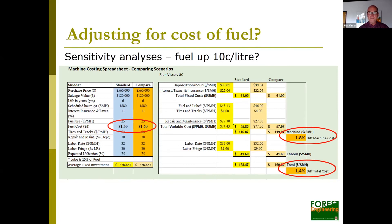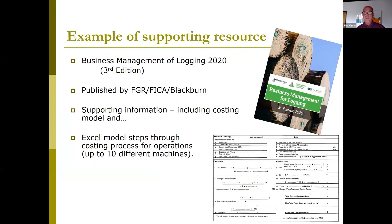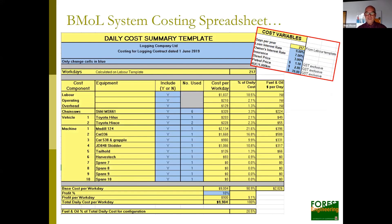The FICA Business Management Logging Handbook, updated in 2020, is freely available from FICA. It includes some of these spreadsheets as well as an Excel costing model that allows you to integrate up to 10 machines, including vehicles, chainsaws, and labor units, coming up with a total daily cost for your harvesting system. One query received was what percent of total cost is fuel: under the current scenario, about 20% of this particular operation's cost was in fuel and oil on a daily basis.